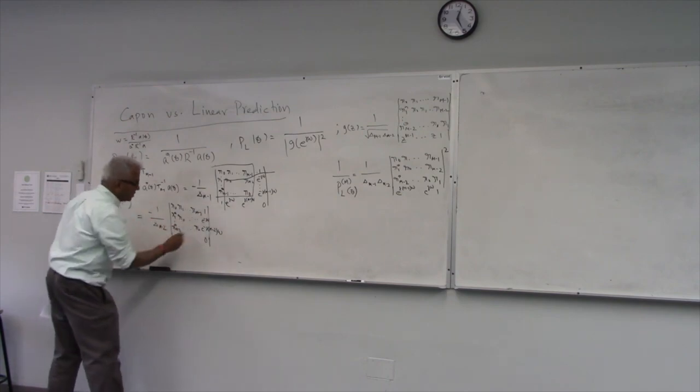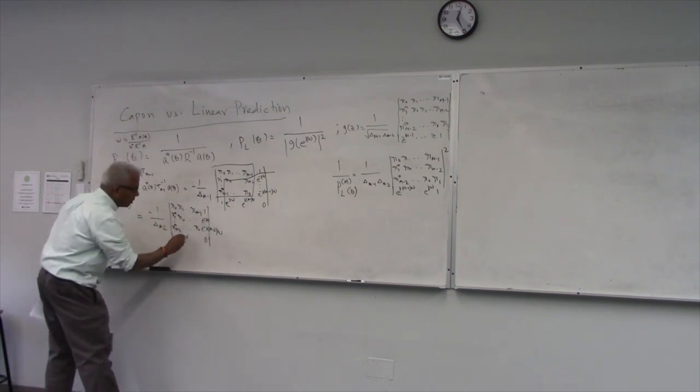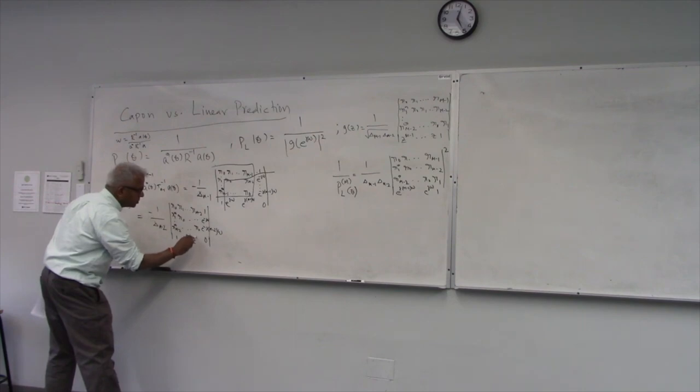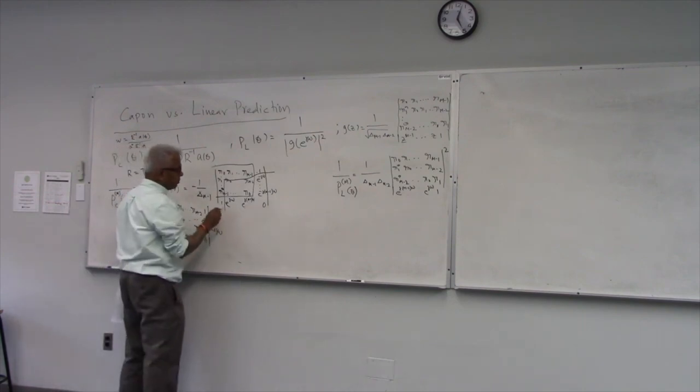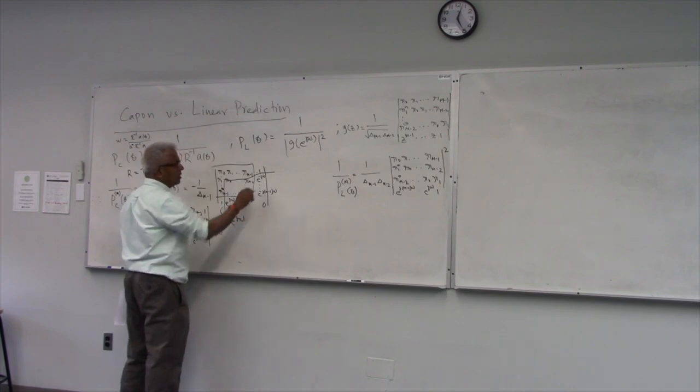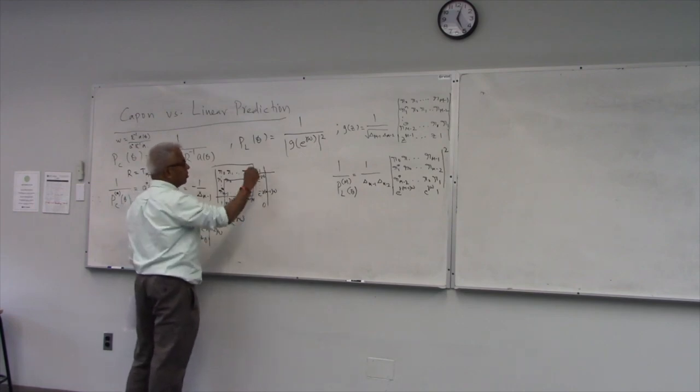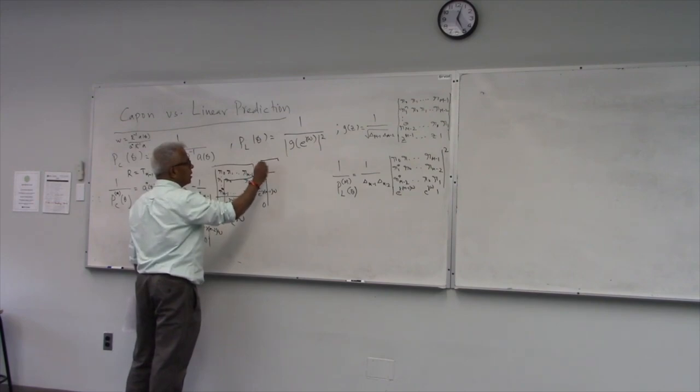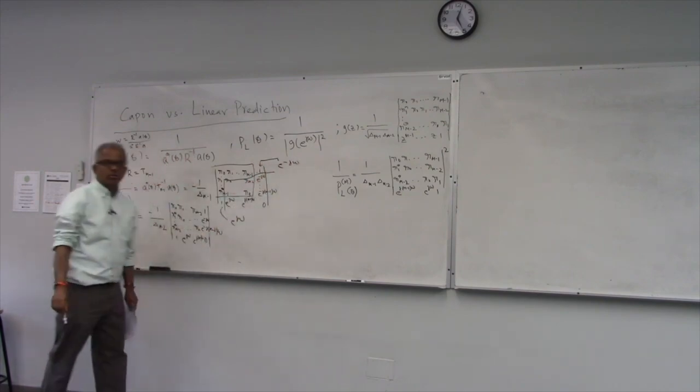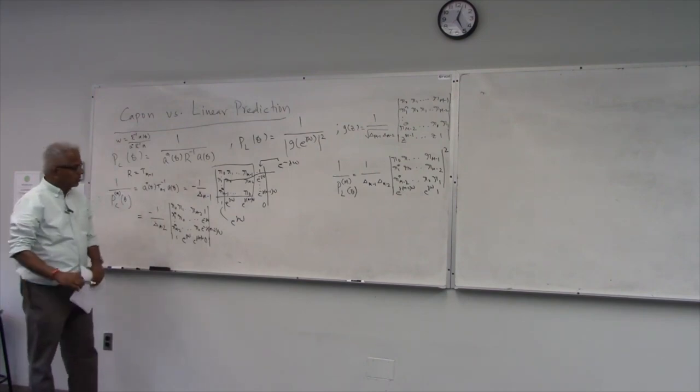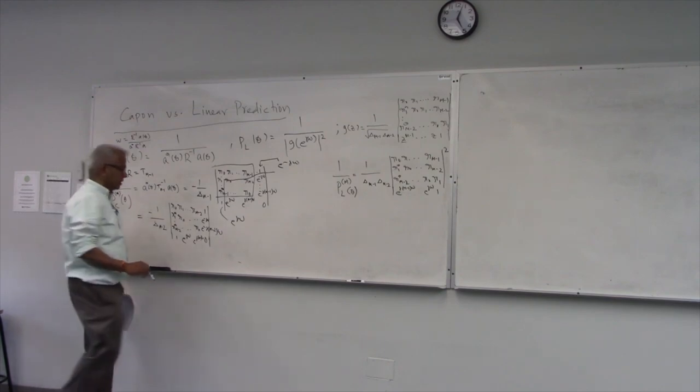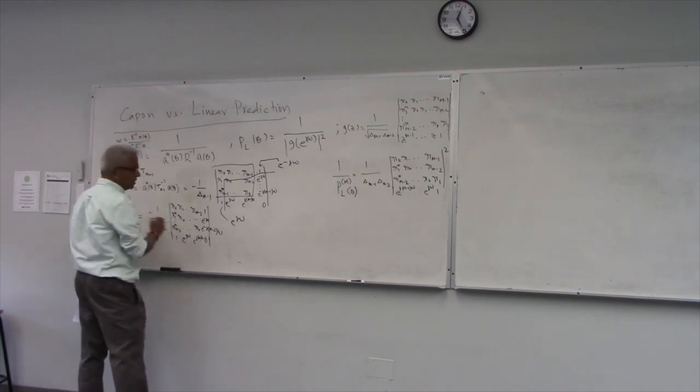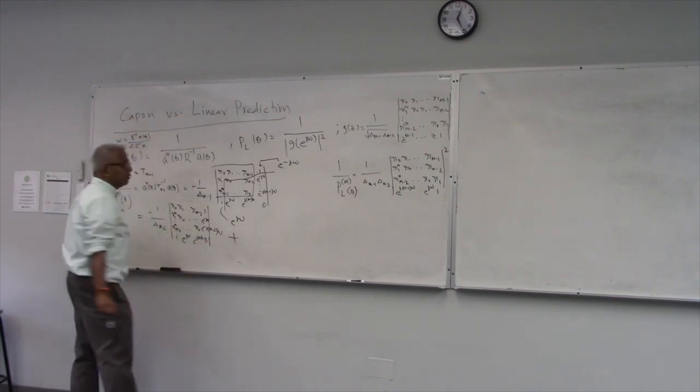Then e raised to minus j omega, e raised to minus two j omega, etc. See, from a column, I can pull out a constant, right. So if I pull out e raised to minus j omega here, this will read now like this. And that zero will remain the same.